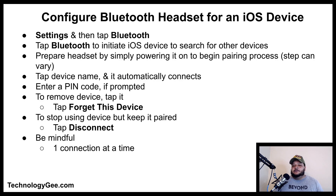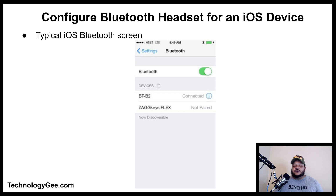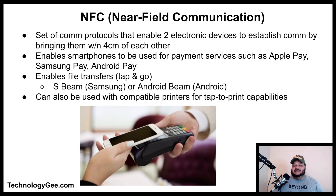For pairing a Bluetooth headset with an iOS device: go to Settings, tap Bluetooth, and initiate a search for other devices. Power on the headset to begin the pairing process, then tap the device name — it should automatically connect. Enter a PIN if required. To remove the device, tap it and select Forget This Device. To stop but keep it paired, tap Disconnect. Note that most Bluetooth devices can only be connected to one mobile device at a time.